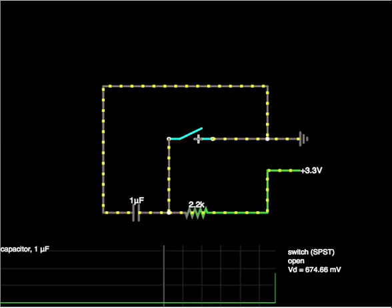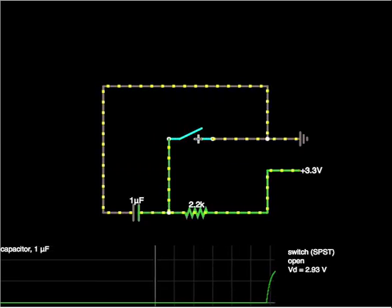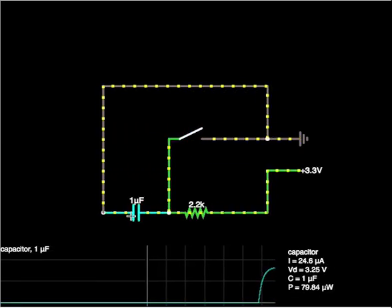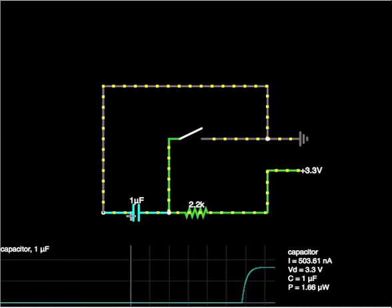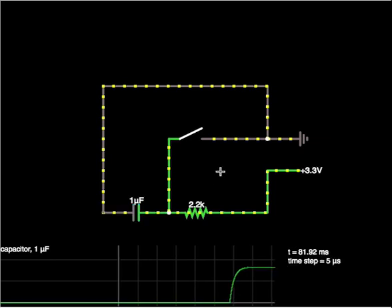Now then, when I open the switch what happens is current can start flowing through the resistor and through the capacitor and the capacitor's voltage will increase. So we've now got 3.3 volts across the capacitor.